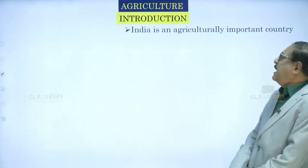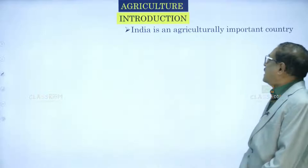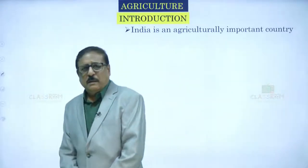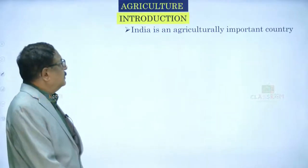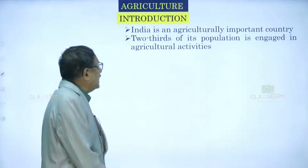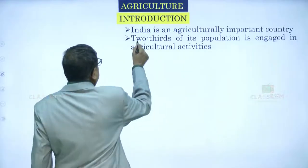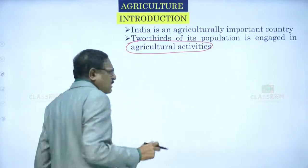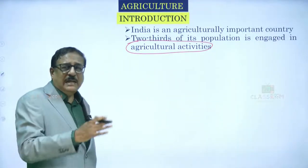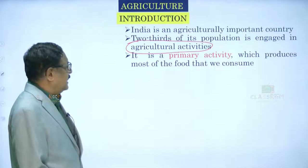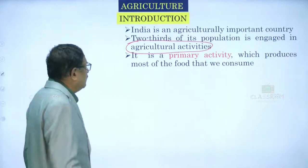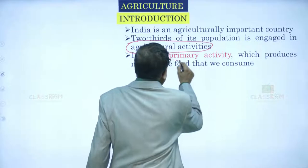Let us see the introduction. India is an agriculturally important country — a major share of our economy is dependent on agriculture. Two-thirds of its population is engaged in agricultural activities, which includes not just farming but also allied activities. It is a primary activity which produces most of the food that we consume.